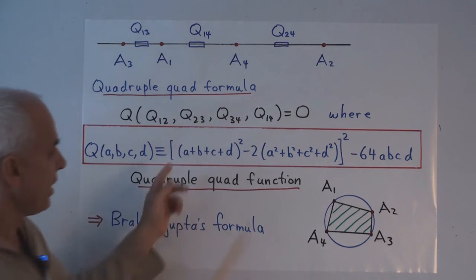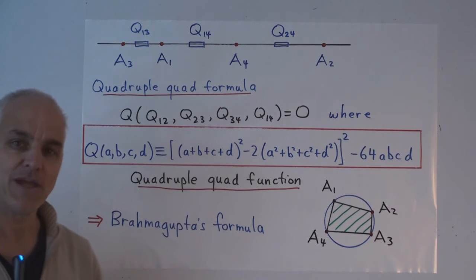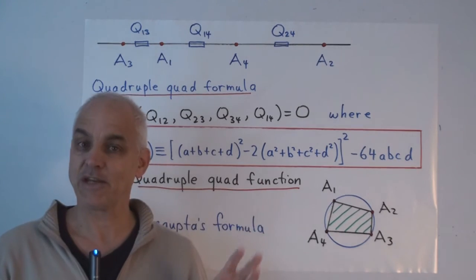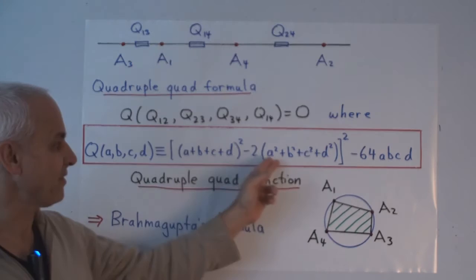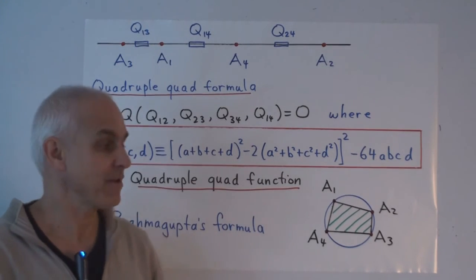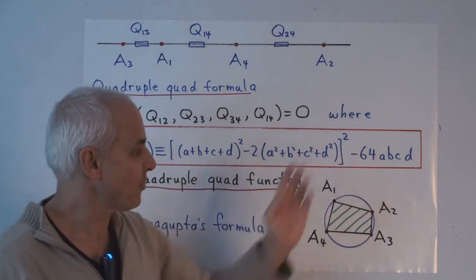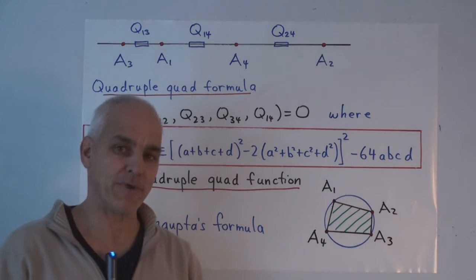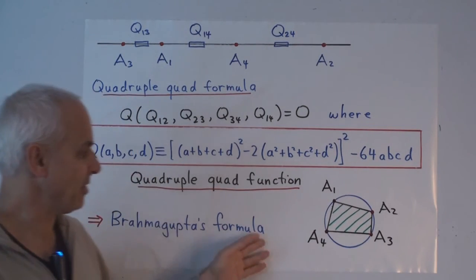It turns out, for example, that this expression that's inside the brackets here is intimately connected with that picture I showed you on the previous slide of the three tangent circles with the fourth circle around it. A formula that goes back to Descartes and to the chemist Soddy. It's also the case that this quadruple quad formula is intimately connected with Brahmagupta's formula for the area of a cyclic quadrilateral. Why that should be is not at all obvious, but it turns out to be a beautiful fact.